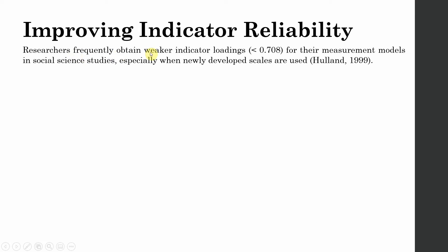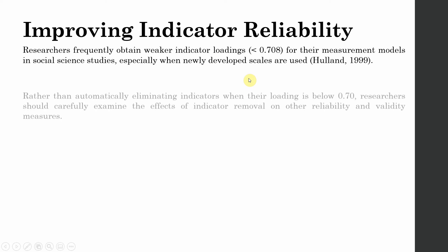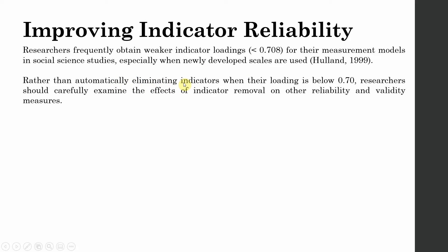Researchers frequently obtain weaker indicator reliability — that is, less than 0.708 — for their measurement models in social sciences studies, especially when newly developed scales are used. Rather than automatically eliminating indicators when their loading is less than 0.708, researchers should carefully examine the effects of indicator removal on reliability and validity. You just do not go on and remove your indicators because their loading was less than 0.708.